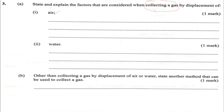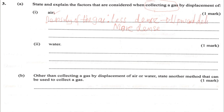The factor that is considered here is density — the density of the gas, that is whether the gas is less dense or more dense than air. So if the gas is less dense, then the method we use to collect that gas is called upward delivery. If the gas is more dense than air, then the method we use is called downward delivery.